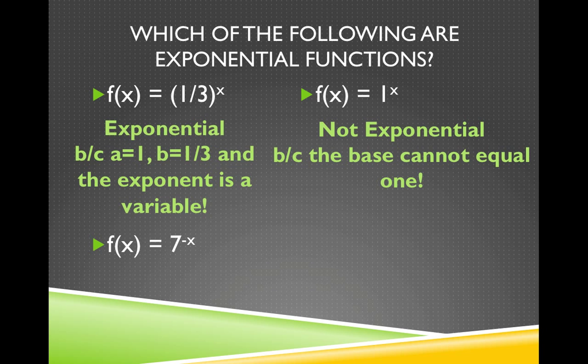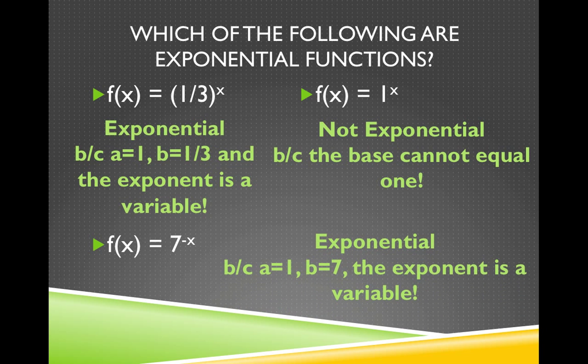f(x) equals 7 to the negative x. This one is exponential because a is equal to 1, b is equal to 7, and the exponent is a variable.